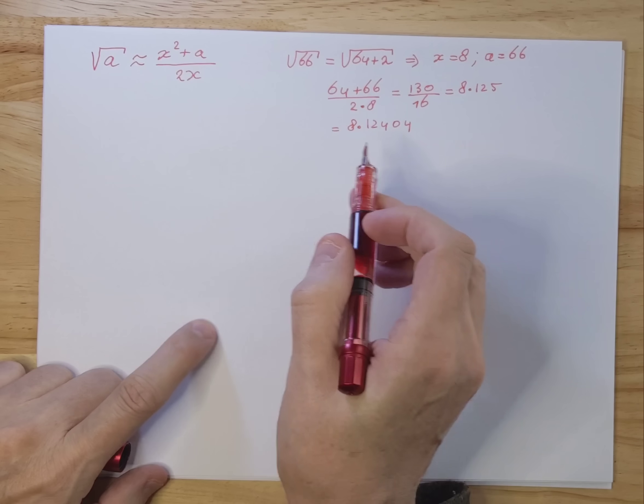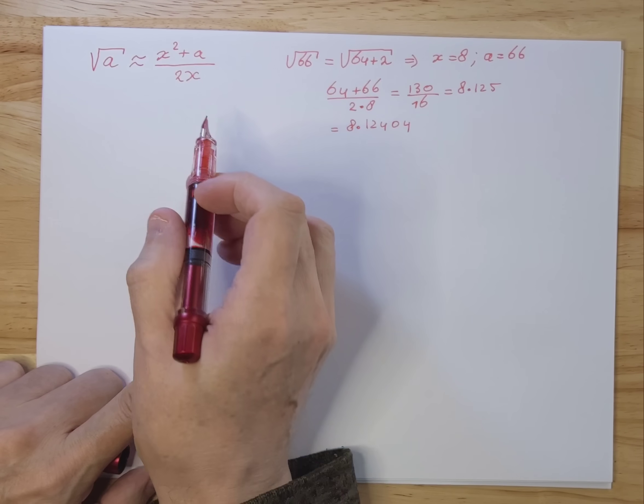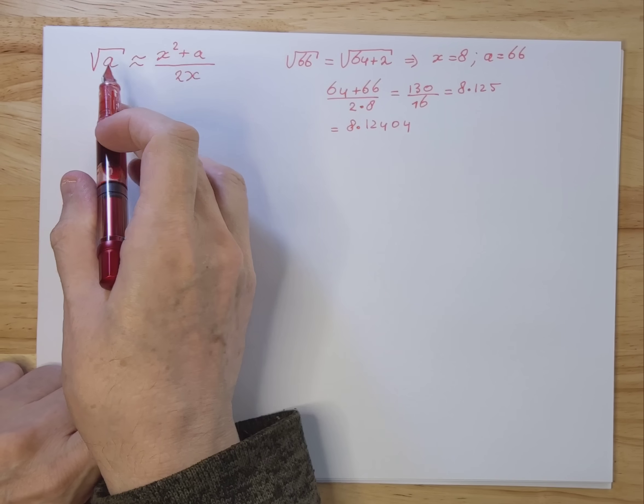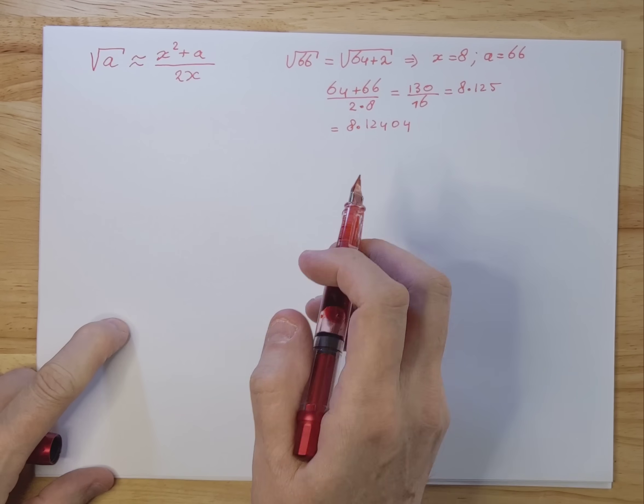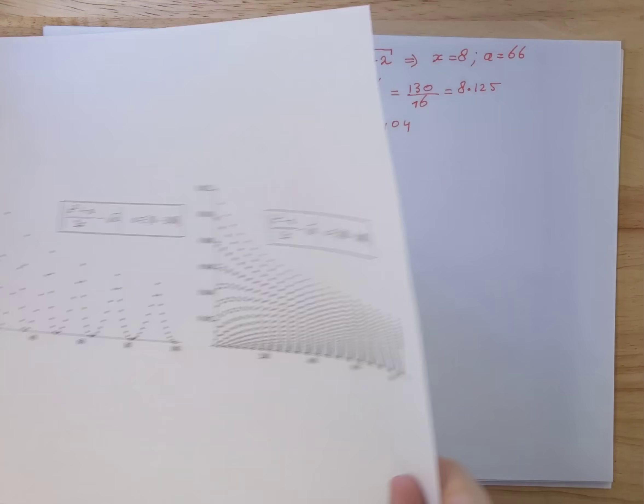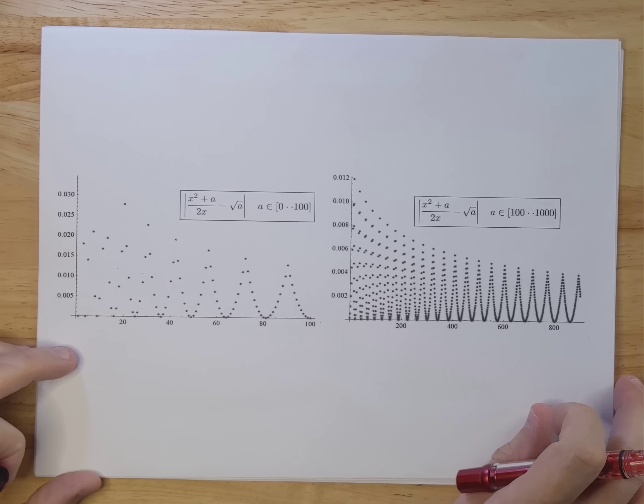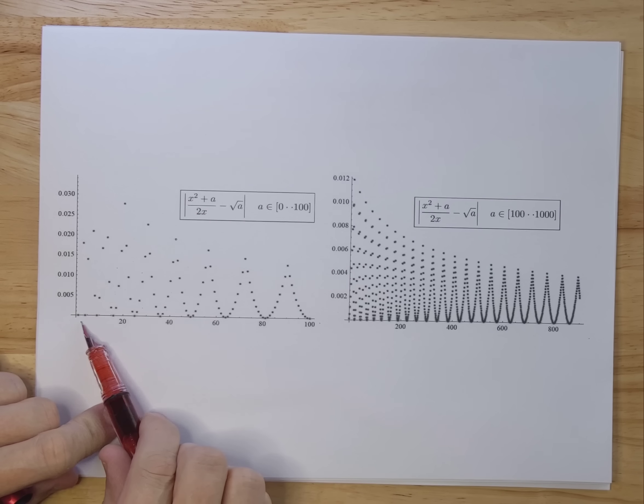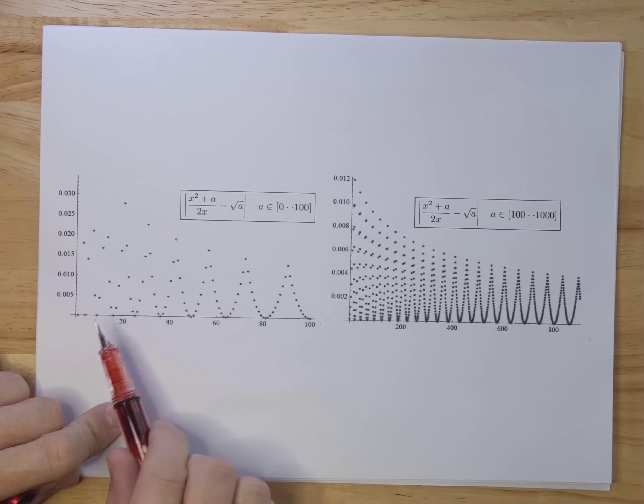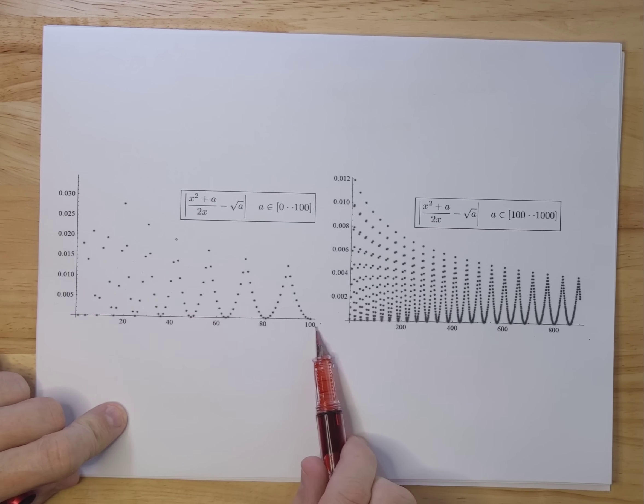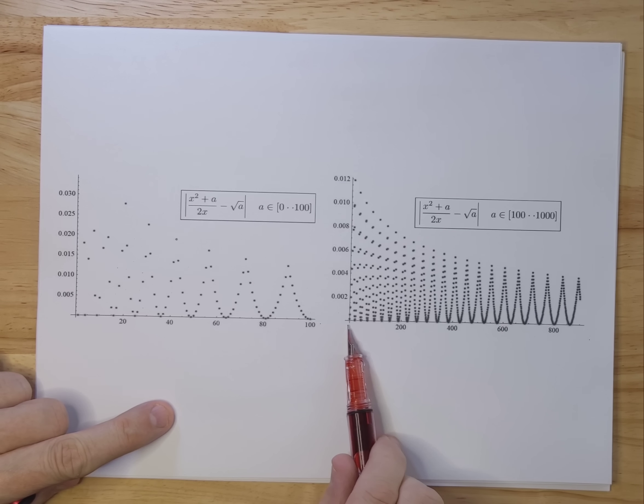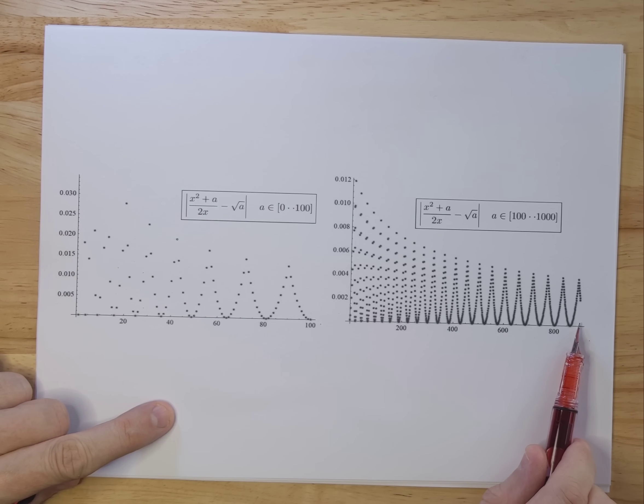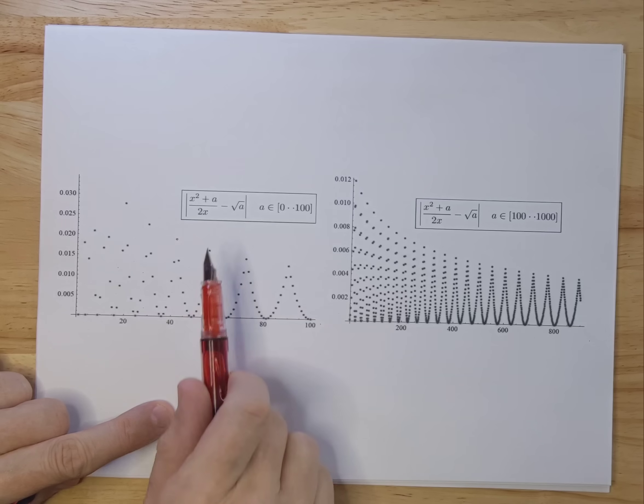Now let's first analyze what the error is for the various values of the square root. So in order to do that, I printed out essentially two plots. The plot over here goes from 0 to 100, and the plot on the right-hand side goes from 101 all the way up to a thousand.